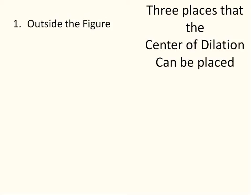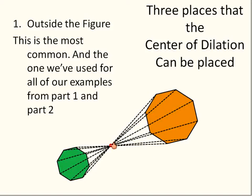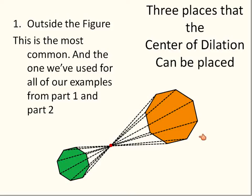Let's talk about the places where a center of dilation can be put. First is outside the figure — every example we've used in part one and so far in part two has had the center of dilation outside the figure. Here's an example with an octagon as the preimage and a second octagon as the image. This would be a negative scale factor because the image is on the opposite side of the center of dilation and larger than the preimage, so the scale factor is a negative number with absolute value greater than one.